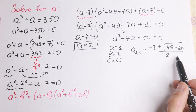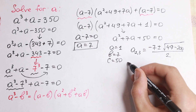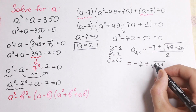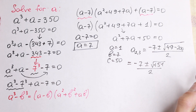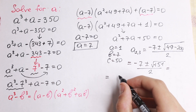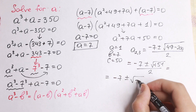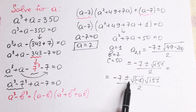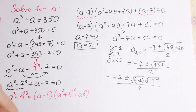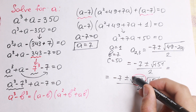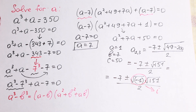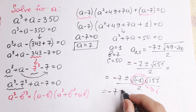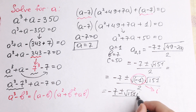Right now I see that the value inside this square root sign will be negative, so as a result we will have complex roots — minus 7 plus or minus square root of minus 151, divided by 2. We can write this another way, because square root of minus 151 equals square root of minus 1 times square root of 151. And square root of minus 1 equals i. So our final two complex roots are minus 7 plus or minus square root of 151 times i, all divided by 2.